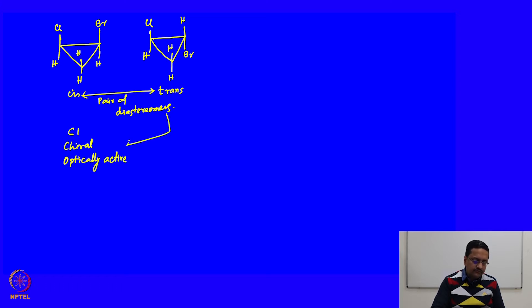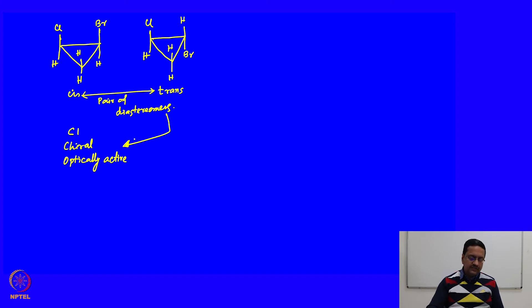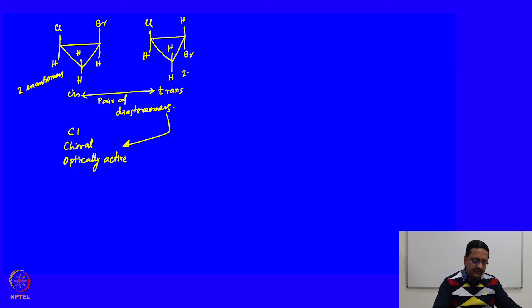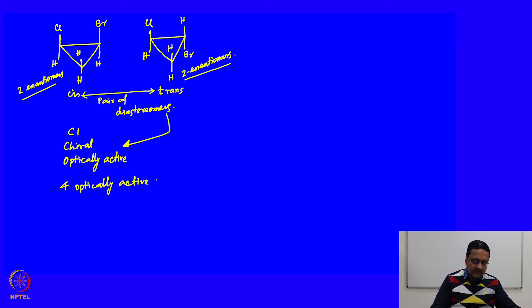The same is true for the trans molecule, because the original compound with two methyl groups had a C2 axis. Now, because the two groups are different, that C2 axis does not exist. Therefore, this molecule is also chiral and optically active. The cis isomer will have 2 enantiomers, the trans compound will also have 2 enantiomers — hence, this compound will have 4 optically active isomers.